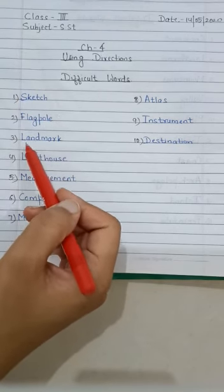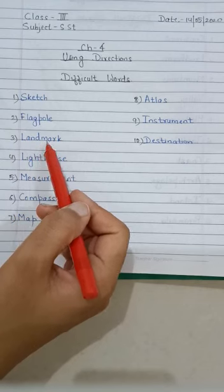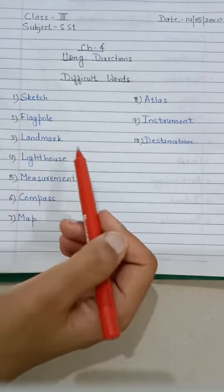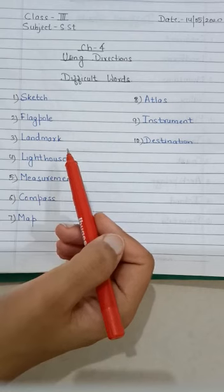The third word is landmark. L-A-N-D-M-A-R-K, landmark. Landmark is an object or a building that is easily seen or recognized.